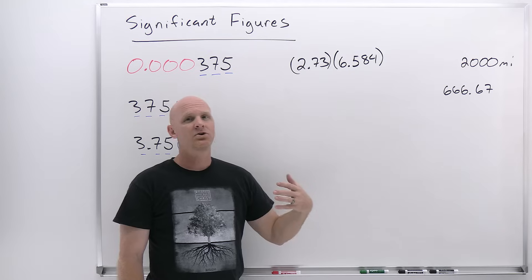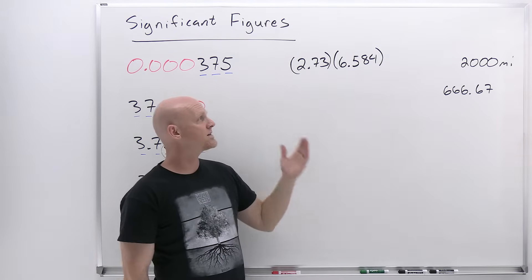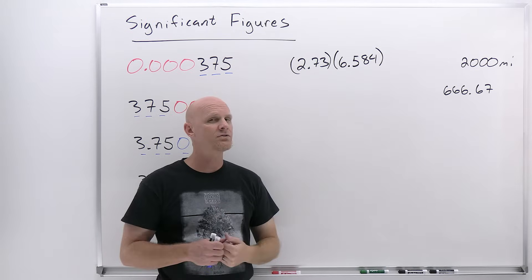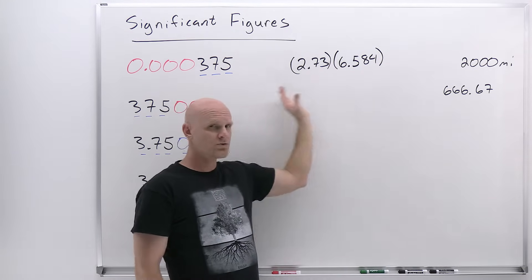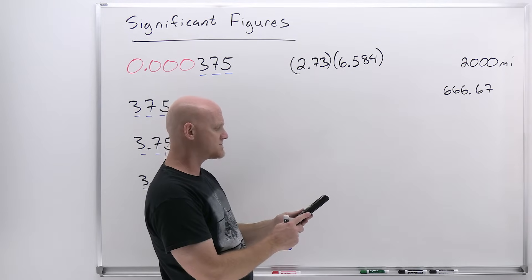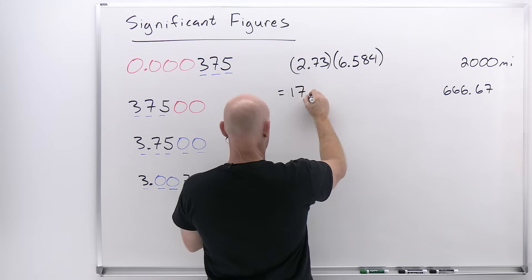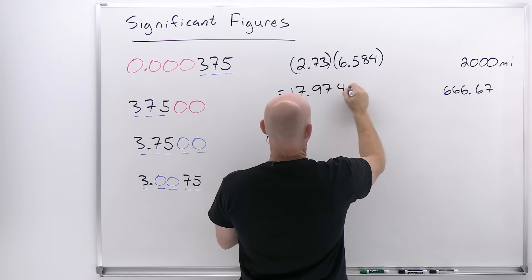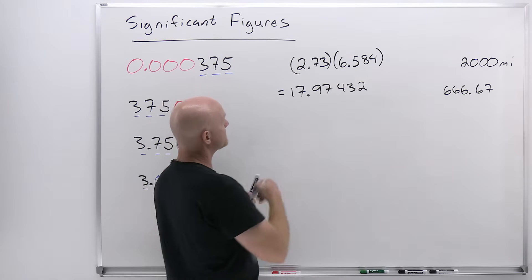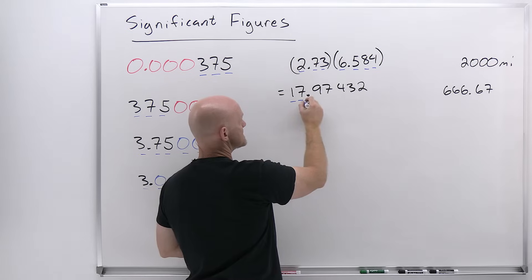With multiplication and division, your answer is going to be rounded to the same number of sig figs as whichever of your inputs has the lowest number of sig figs. It doesn't matter if you're multiplying two numbers or a whole string — as long as there's no addition or subtraction involved, you only apply this rule once at the end. So 2.73 times 6.584, using a calculator, gives us 17 and some change — written out as 17.97432.